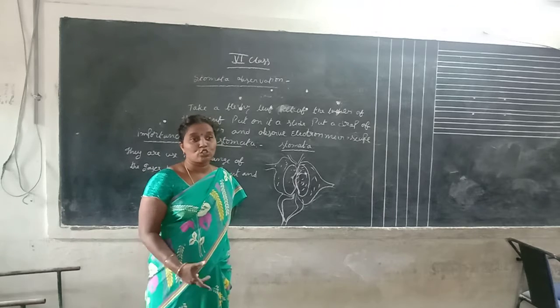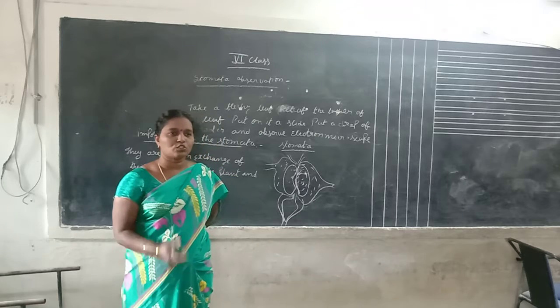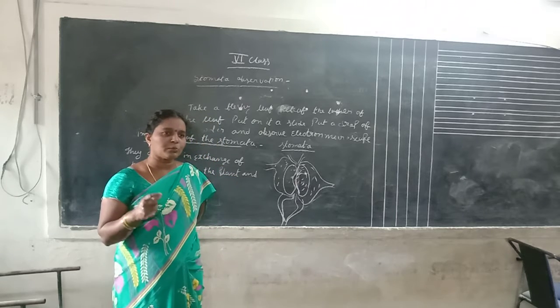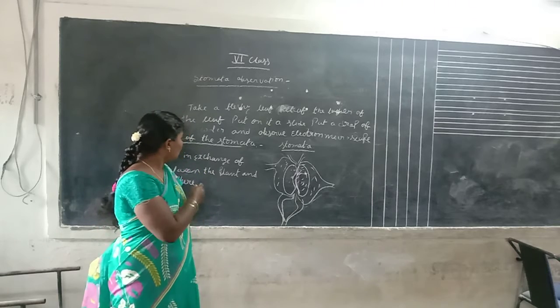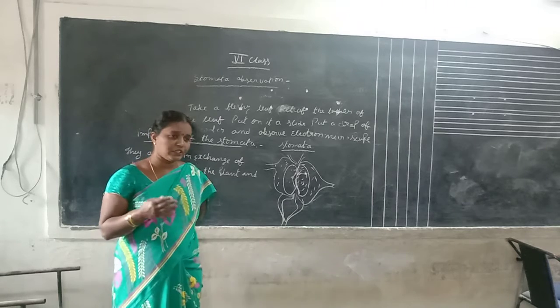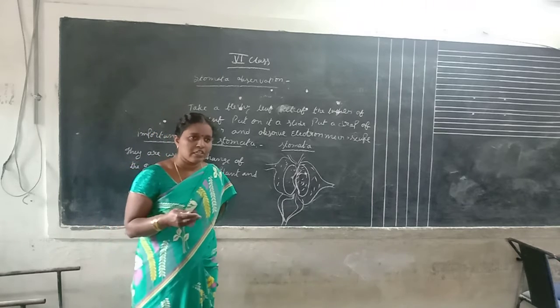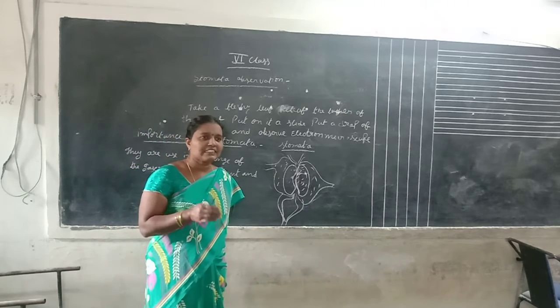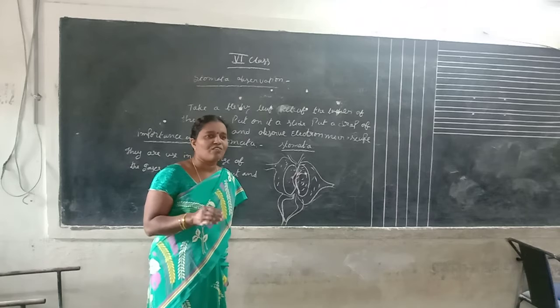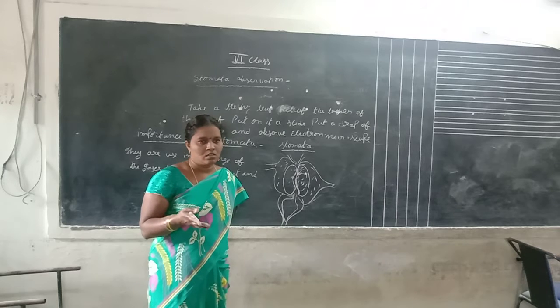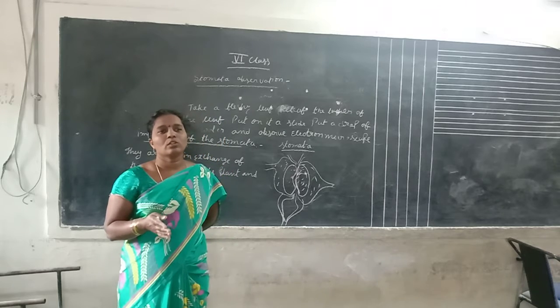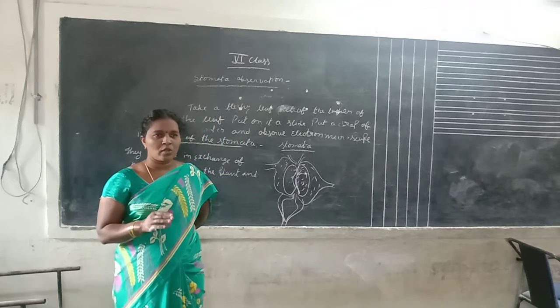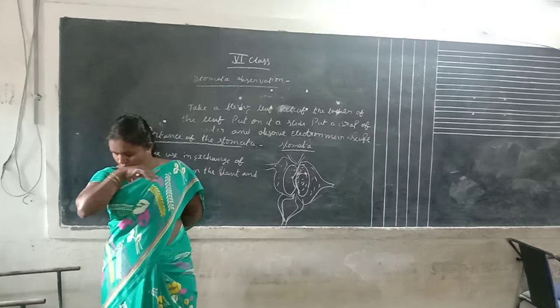What is the stomata? The stomata is a bean-shaped structure. The leaf acts as our nose. These openings are also called stomata.